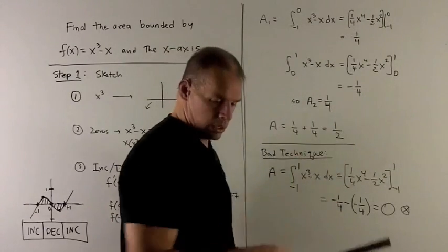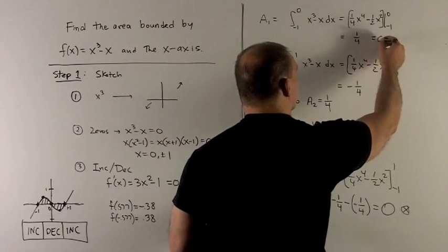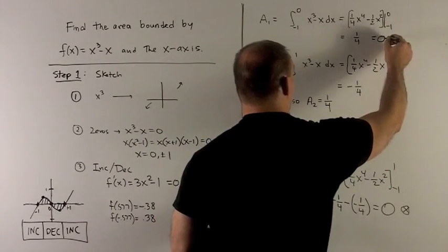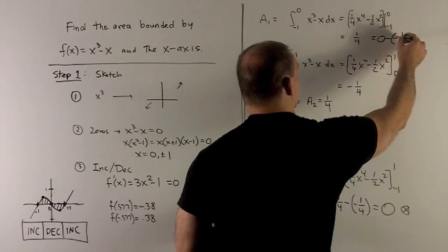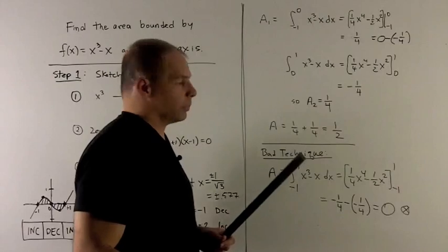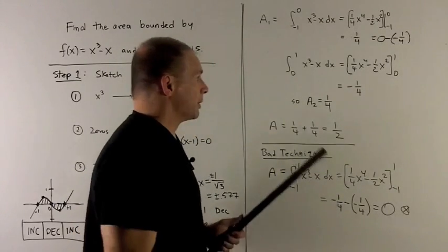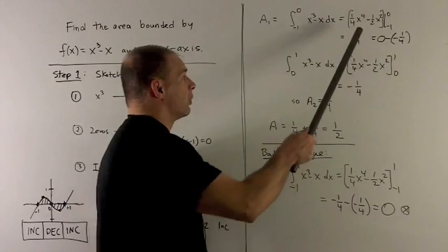Putting zero in here gives me zero. Putting -1 in here gives me, there's our zero from zero, and then minus the -1/4 we get. When we put one into there, that gives me 1/4 - 1/2. Minus a minus gives me a plus, so I get 1/4 here.